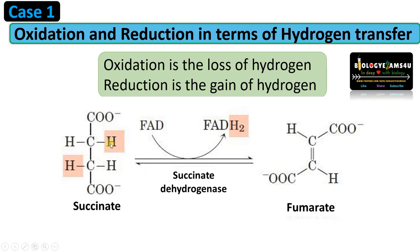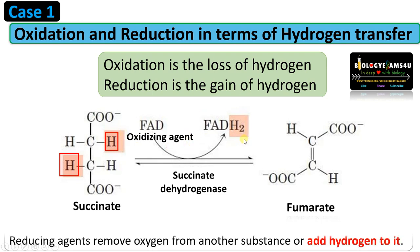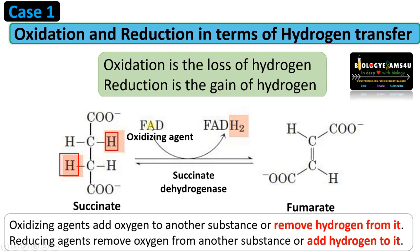As you see, succinate has two hydrogens, and this hydrogen is donated to FAD. FAD is the oxidizing agent and it becomes FADH2. FAD is reduced to FADH2, and hydrogen is donated by succinate. As loss of hydrogen is oxidation, succinate is oxidized to form fumarate.